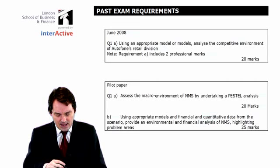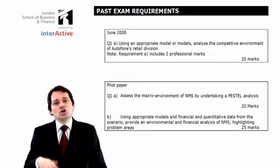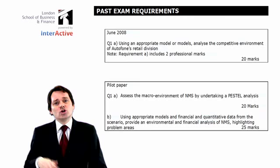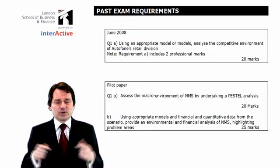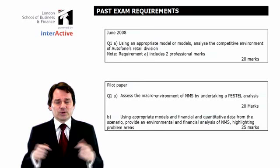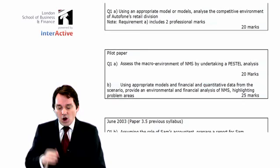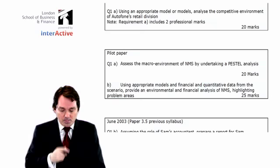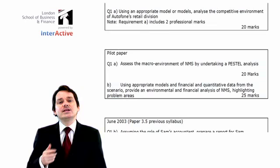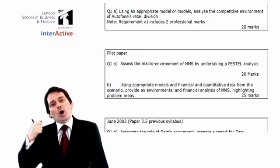Let's look at the kind of questions the examiner could ask you. In question one, part A from the June 2008 exam: 'Use an appropriate model, analyse the environment.' The examiner tells you what's going on, you use a model and say this is an example of something. Off the pilot paper: 'Assess the macro environment by undertaking a PESEL analysis' — the examiner tells you which model to use. Part B: 'Use an appropriate model and, using some data, provide an environmental analysis.' The idea with both of these is to talk about what's going on.